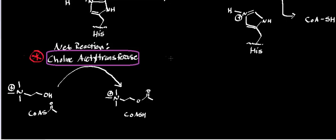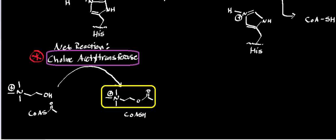The ultimate goal of this enzyme is to synthesize this molecule right here, highlighted in yellow, which is called acetylcholine. Acetylcholine is a neurotransmitter, and it has a wide variety of implications, which we'll look at in a separate video to give you some intuition on what it might do.